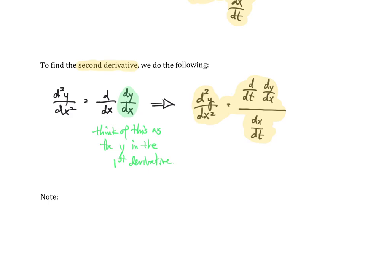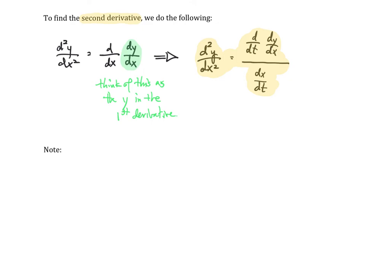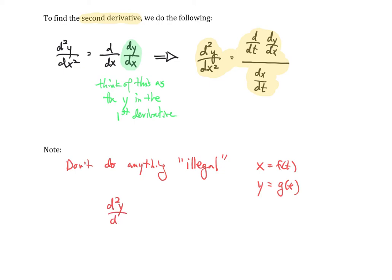I just wanted to remind you: don't do anything illegal. And what do I mean by illegal? Sometimes when x equals f of t and y equals g of t, what a lot of students do incorrectly is they say the second derivative is simply the second derivative of the numerator function divided by the second derivative of the denominator function. This is totally incorrect — it is not the same as the formula we've described.